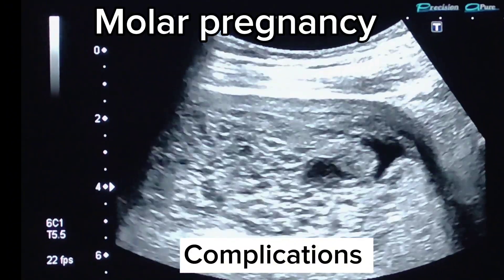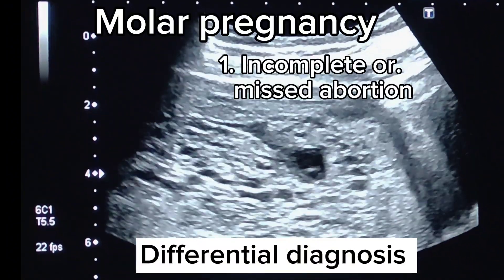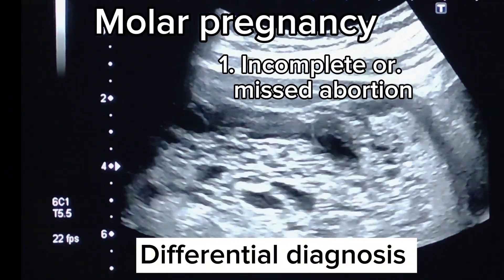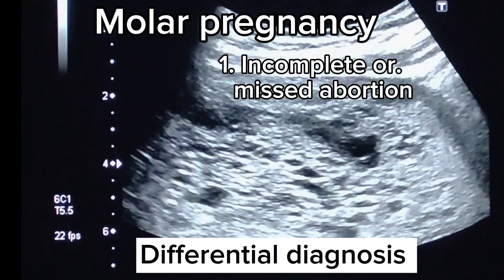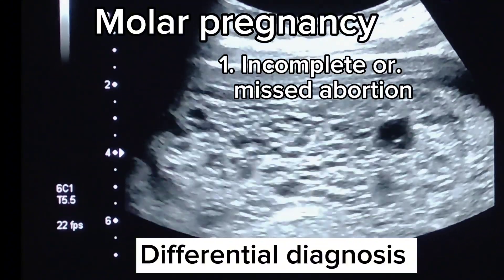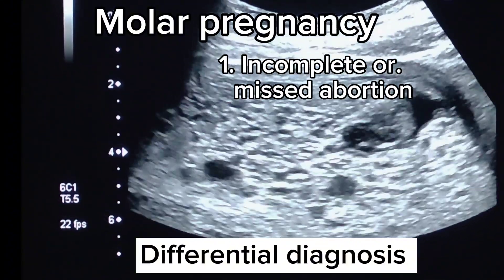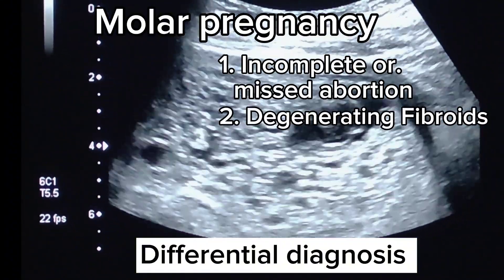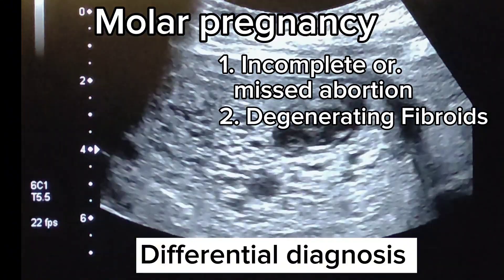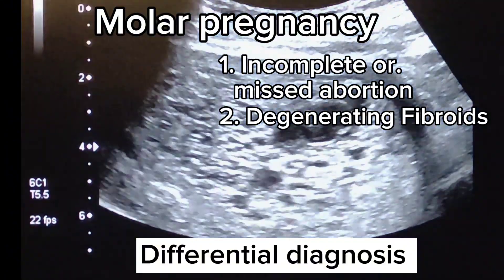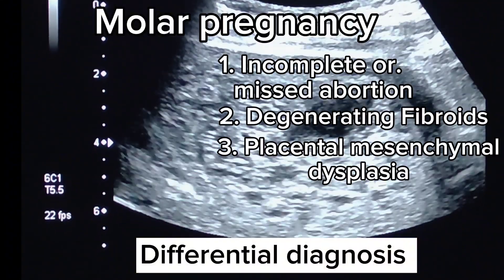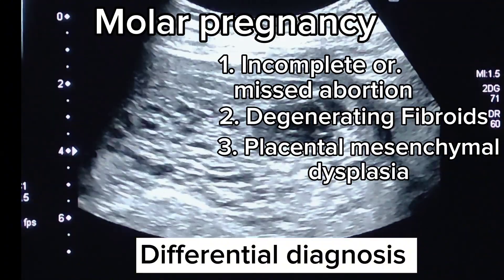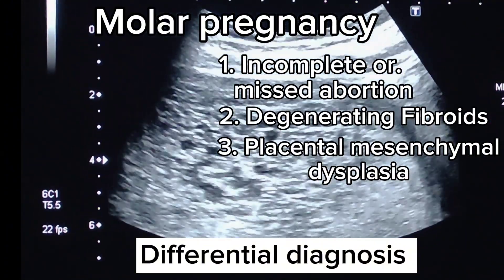What is the differential diagnosis? Incomplete or missed abortion: retained products of conception (RPOCs) can mimic hydatidiform mole but lack the classic vesicular pattern. Degenerating fibroids can appear heterogeneous but do not have a snowstorm pattern. Placental mesenchymal dysplasia shows a cystic placenta but coexists with a normal fetus.